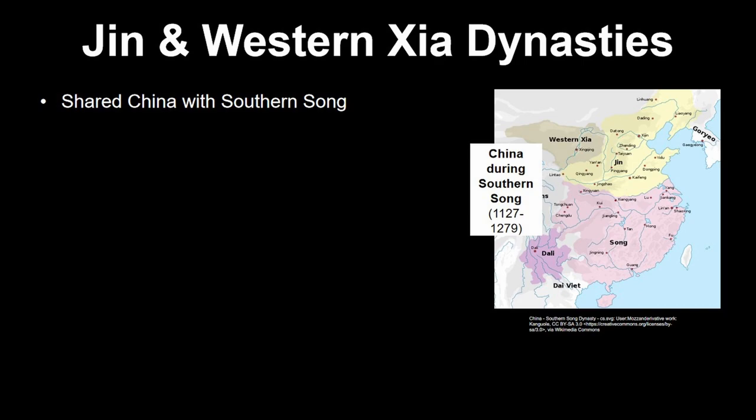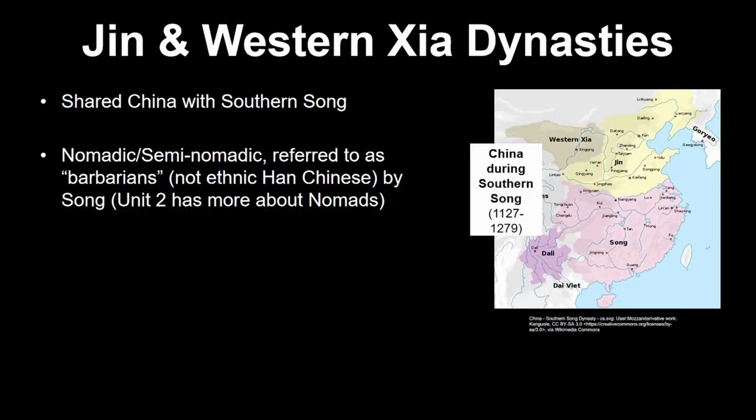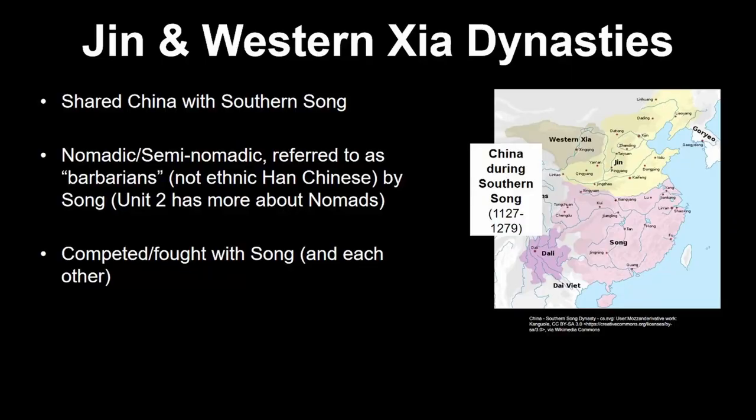Let's take a quick look at the Jin and the Western Xia as a combined key term. You really only need to know a few general things about them. They were both led by nomadic or semi-nomadic peoples whose leaders were not ethnic Chinese. Though these barbarians, as the Song referred to them, competed and often fought for territory with the Song, there were also many peaceful interactions, especially involving trade and tribute. They're just not that big of a deal on the AP World History Modern Exam.